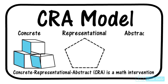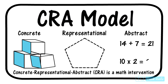The last phase is Abstract, which is the most difficult for students to comprehend. This is where students must add and multiply numbers on a piece of paper, such as 14 plus 7, or 10 times 2.